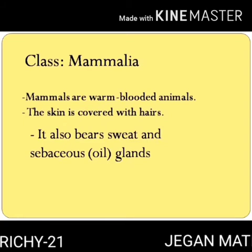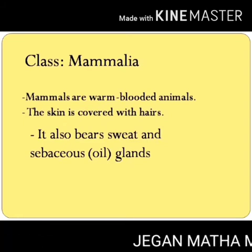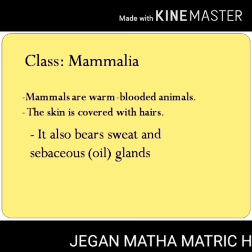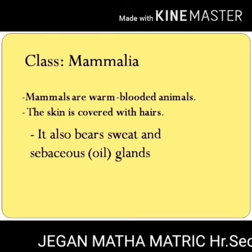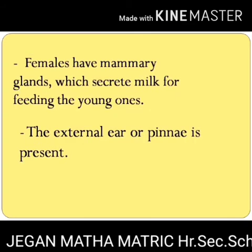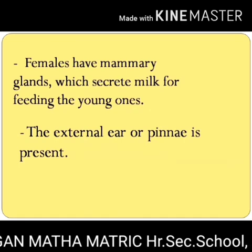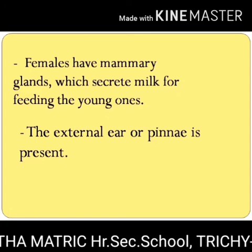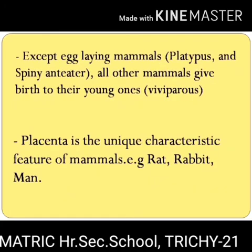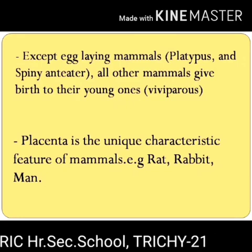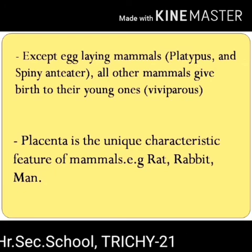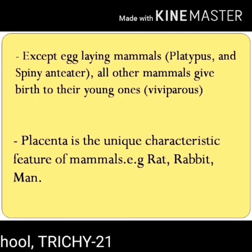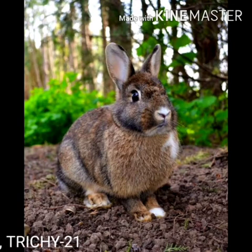Class Mammalia. Mammal means breast. Mammals are warm-blooded animals. The skin is covered with hair and bears sweat and sebaceous glands — sebaceous gland is the oil gland. The body is divisible into head, neck, trunk, and tail. Females have mammary glands which secrete milk for feeding the young ones. The external ear or pinnae is present. Heart is four-chambered and they breathe through lungs. Except egg-laying mammals, all other mammals give birth to their young ones and are called viviparous. Placenta is the unique characteristic feature of mammals. Examples: rat, rabbit, man.